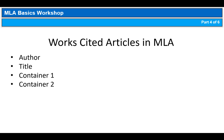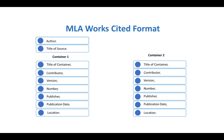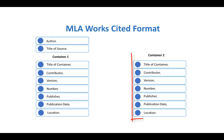Author, title, and container 1 should be recognizable since we covered those in the citing books video. With articles, we will be using different elements, but the flow should be familiar. In addition, since most of the articles you will be citing will come from the library databases, container 2 is going to come into play.